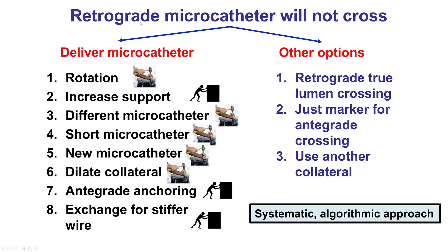To summarize, there are several solutions when the retrograde microcatheter will not cross. Solutions for delivering the microcatheter focus on modifying the collateral — using rotation, different microcatheters (shorter or brand new), or dilating septals only with a small balloon. Ways to increase support include putting forward pressure on the guide, using a guide extension, side branch anchoring, antegrade anchoring, or exchanging for a stiffer guide wire. If this fails, options include retrograde crossing or using the retrograde wire as a marker for antegrade crossing, or trying another collateral more amenable to microcatheter navigation. The key is to have a systematic algorithmic approach until success is achieved.